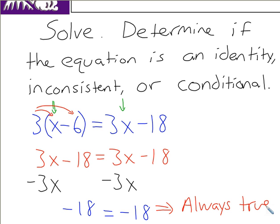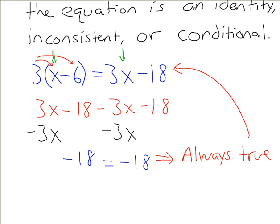So the variables are gone, and the result that we have is something that's always true, which means that the original equation is always true also. No matter what you plug in for x, the equation is always going to come out true. And that is what we call an identity. So this means we have an identity. That's the type of equation we have.